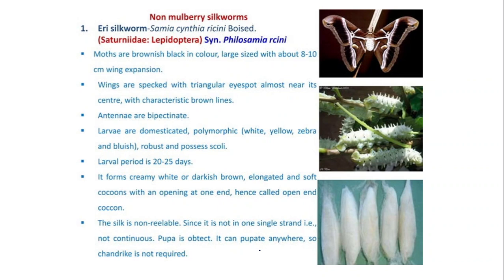Now we will discuss non-mulberry silkworms. The first is the eri silkworm. Its scientific name is Samia cynthia ricini, with synonym Philosamia ricini, and it belongs to the family Saturniidae. The moth is brownish-black in color, large-sized, with about 8 to 10 centimeter wing expansion. Wings are speckled with a triangular eye-spot almost near the center, with characteristic brown lines.